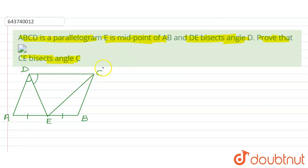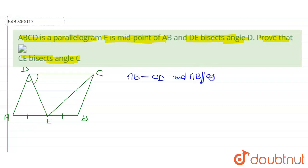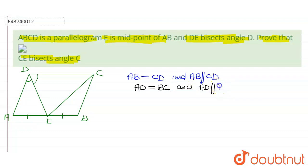Therefore, if ABCD is a parallelogram, then AB is equal to CD and AB is parallel to CD. Also, we have AD is equal to BC and AD is parallel to BC.